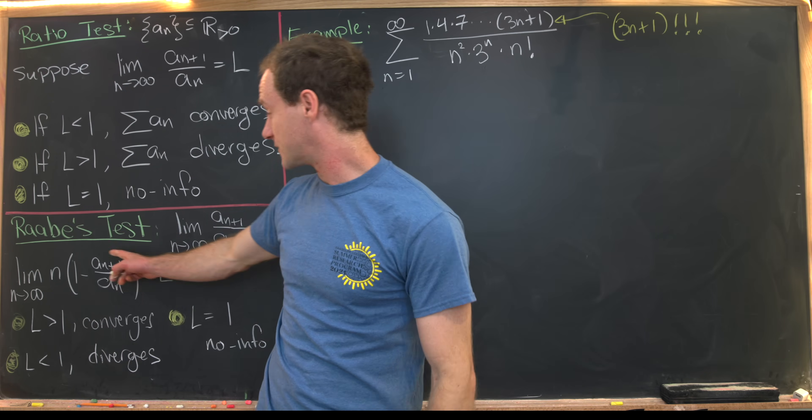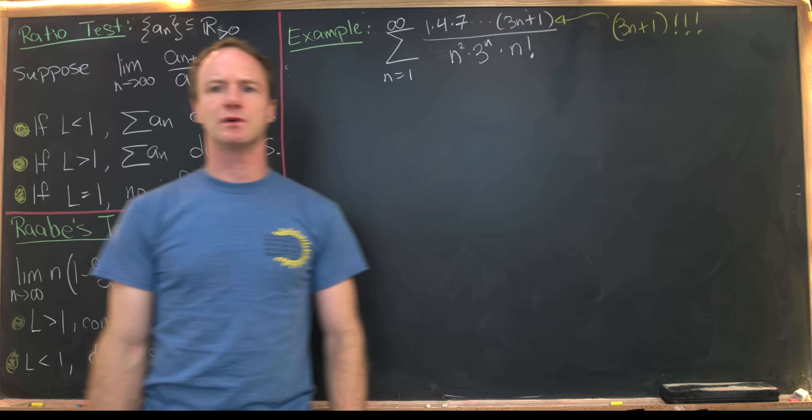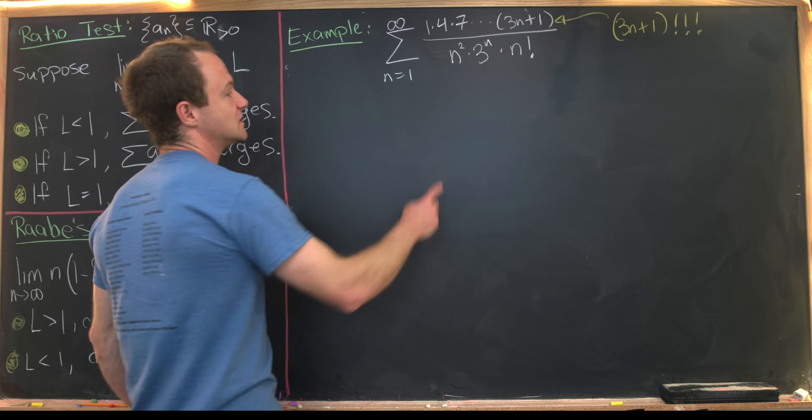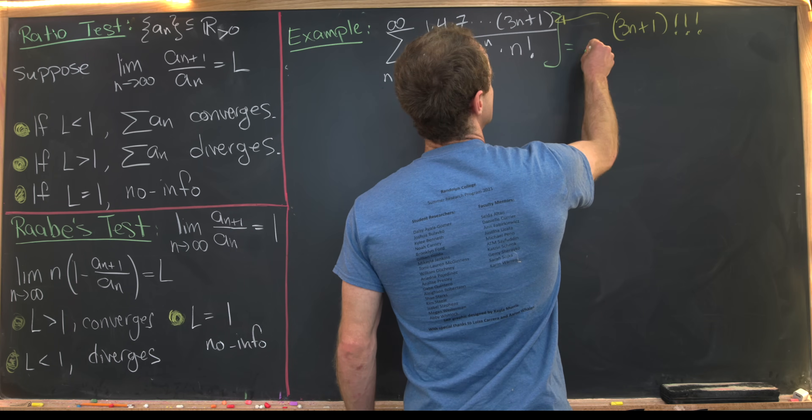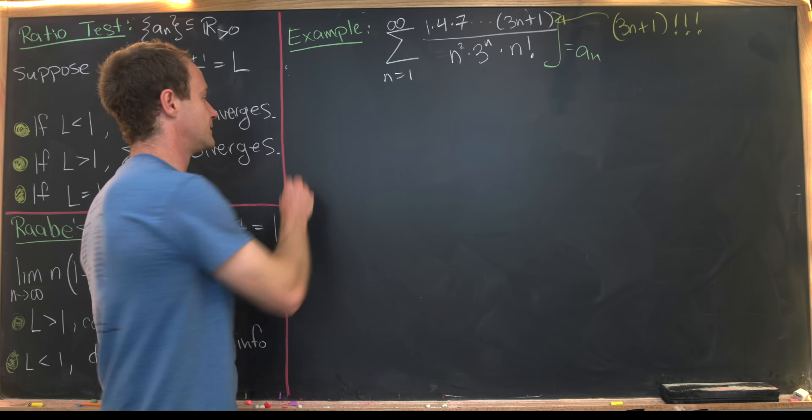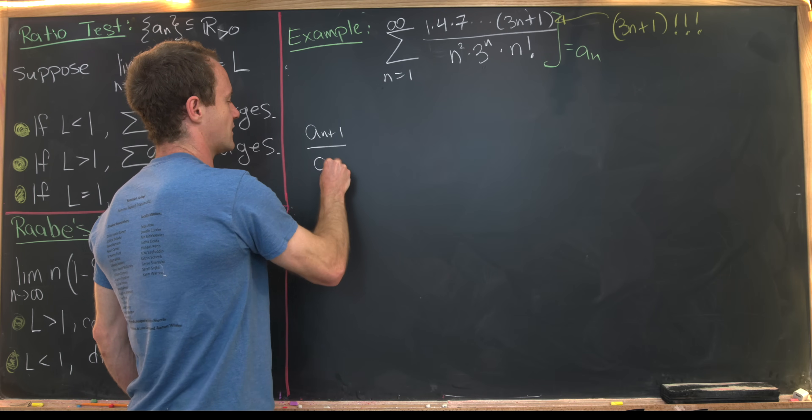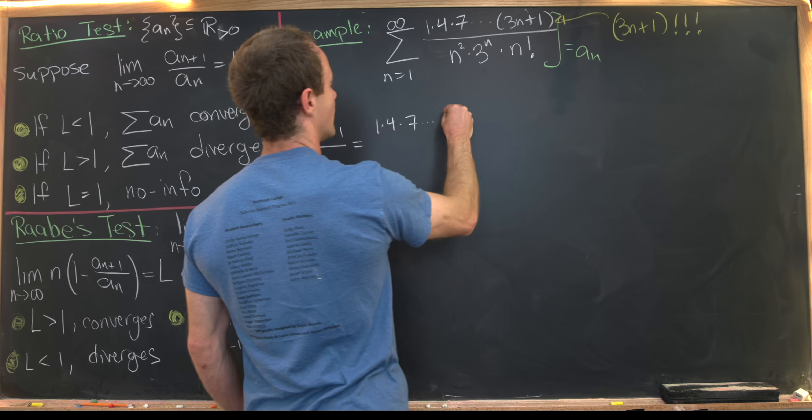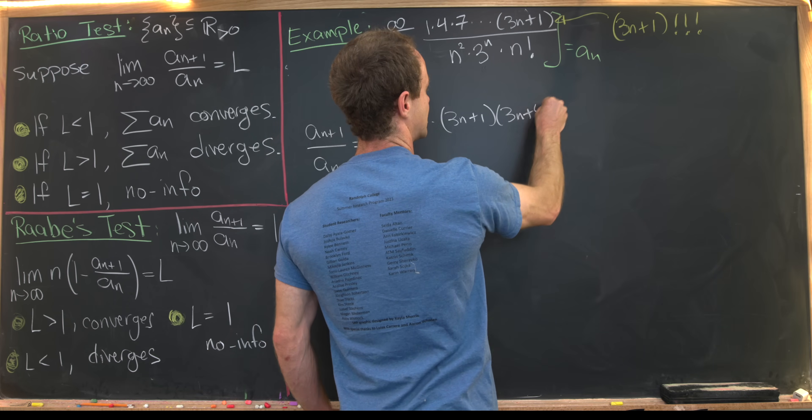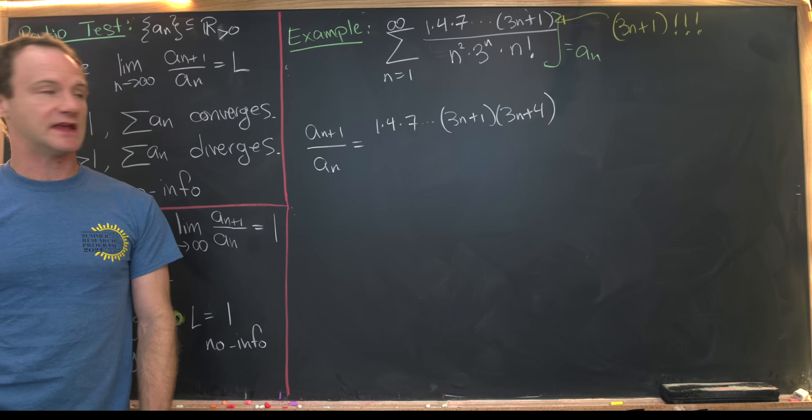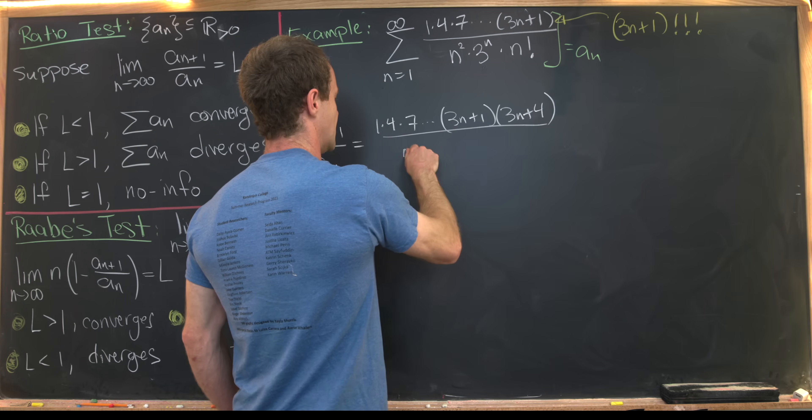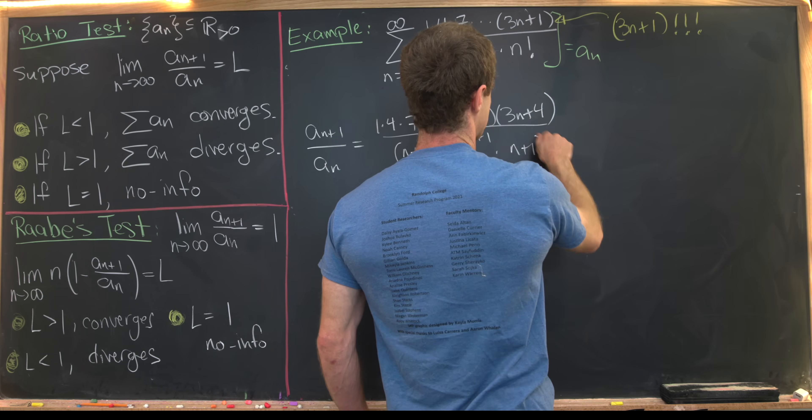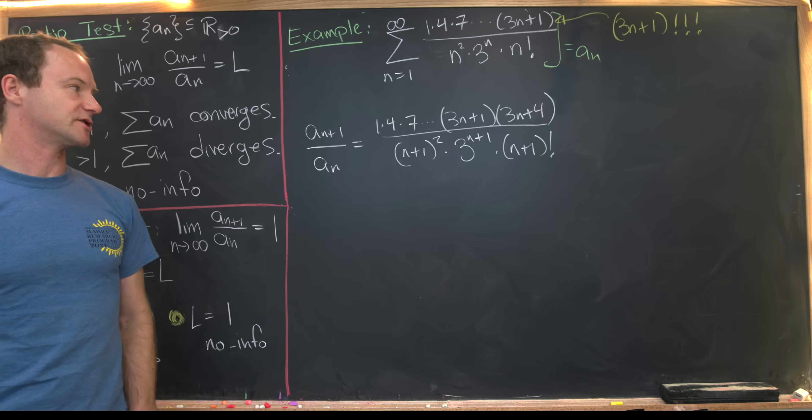Okay, notice that the ratio of terms is part of this test, so we might as well calculate that along the way and show that the ratio test itself does not work. So we'll set all of this equal to a_n and then really get going on it. So notice that a_{n+1}/a_n, well that's going to be equal to (1·4·7···(3n+1)(3n+4))/((n+1)²·3^{n+1}·(n+1)!). So this entire term is a_{n+1}.